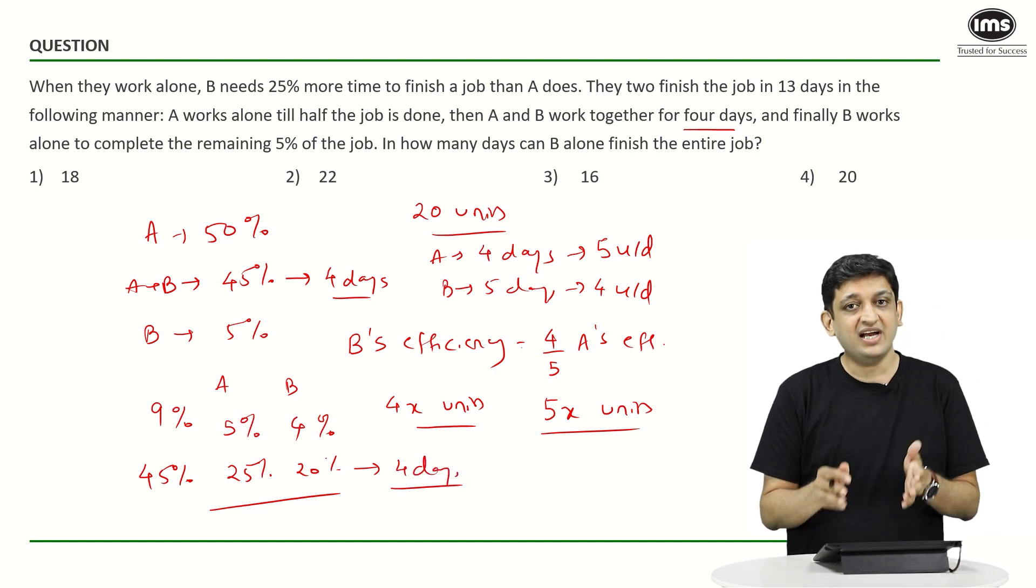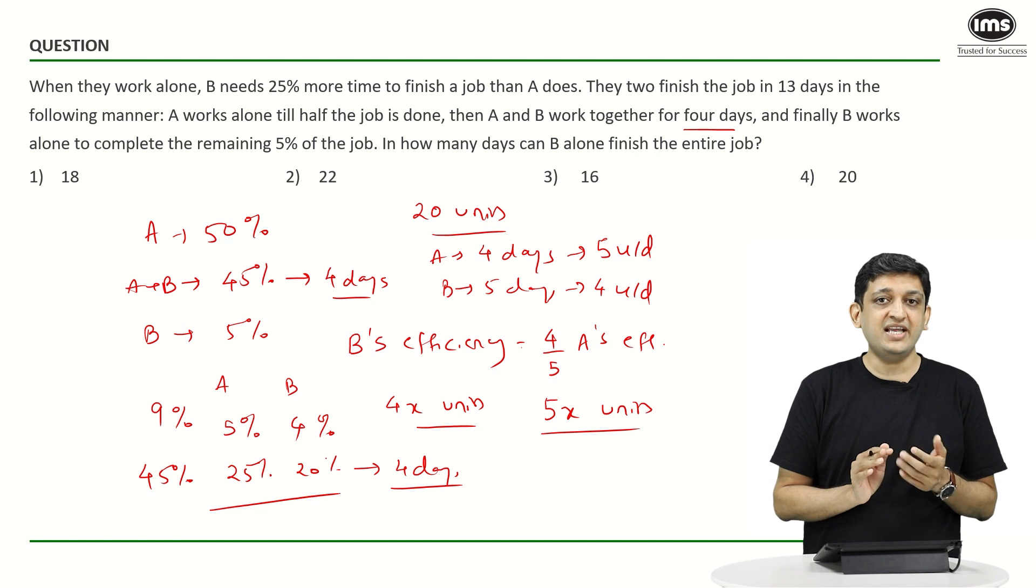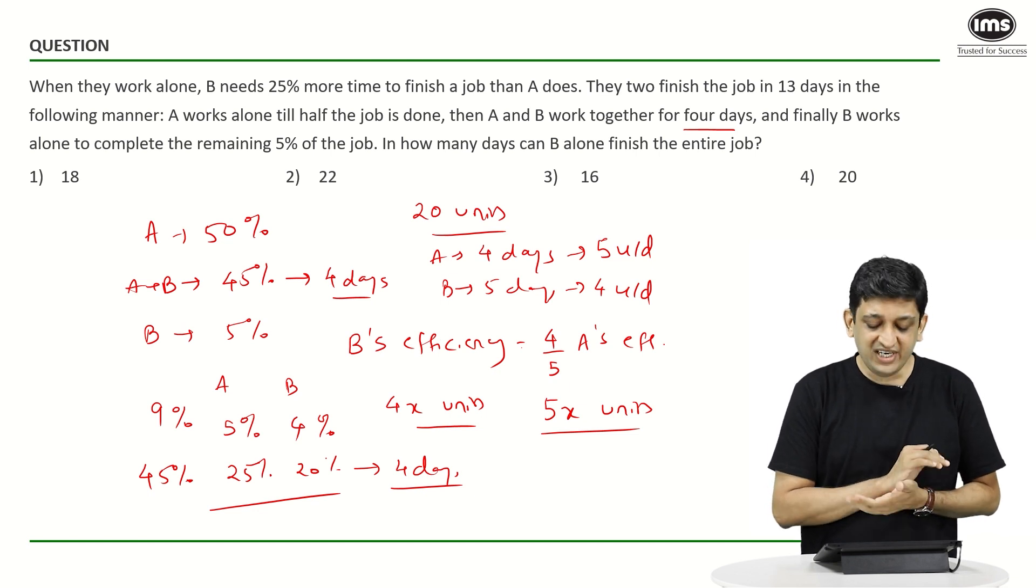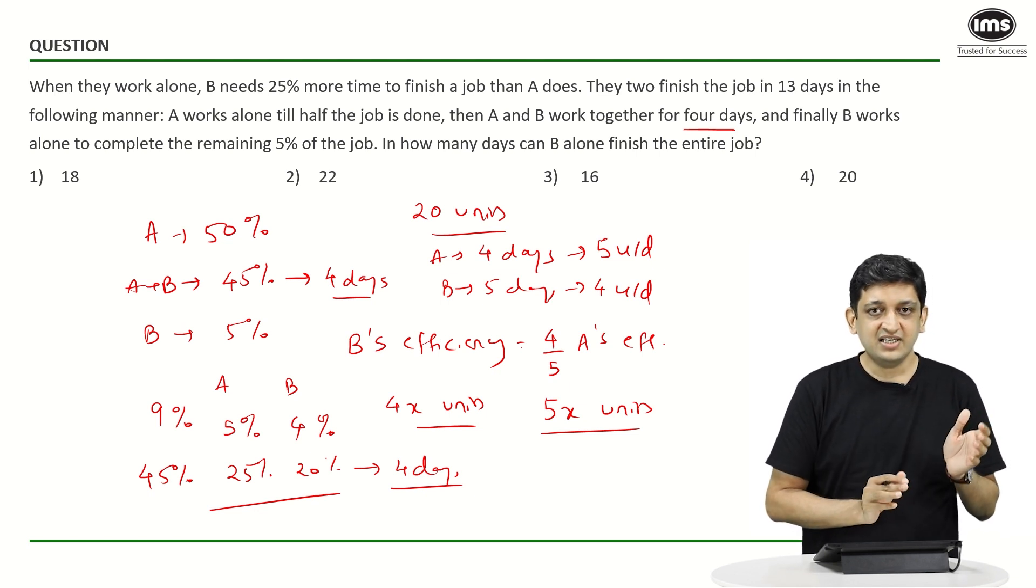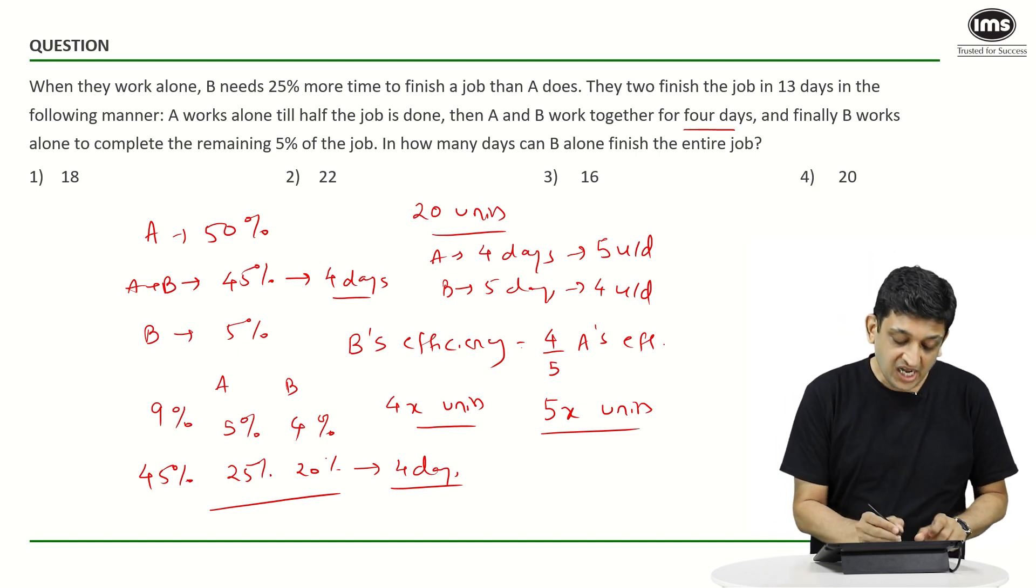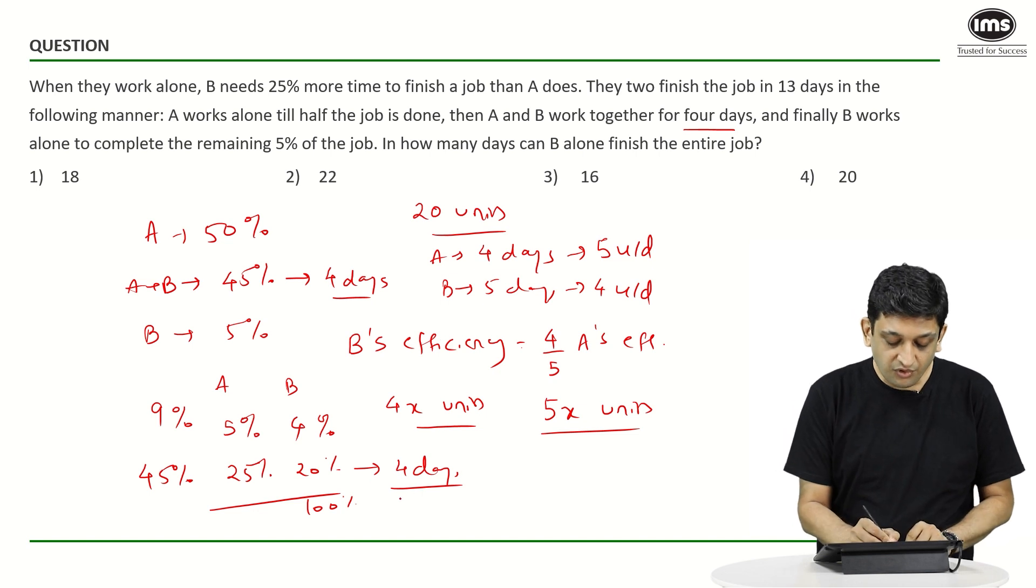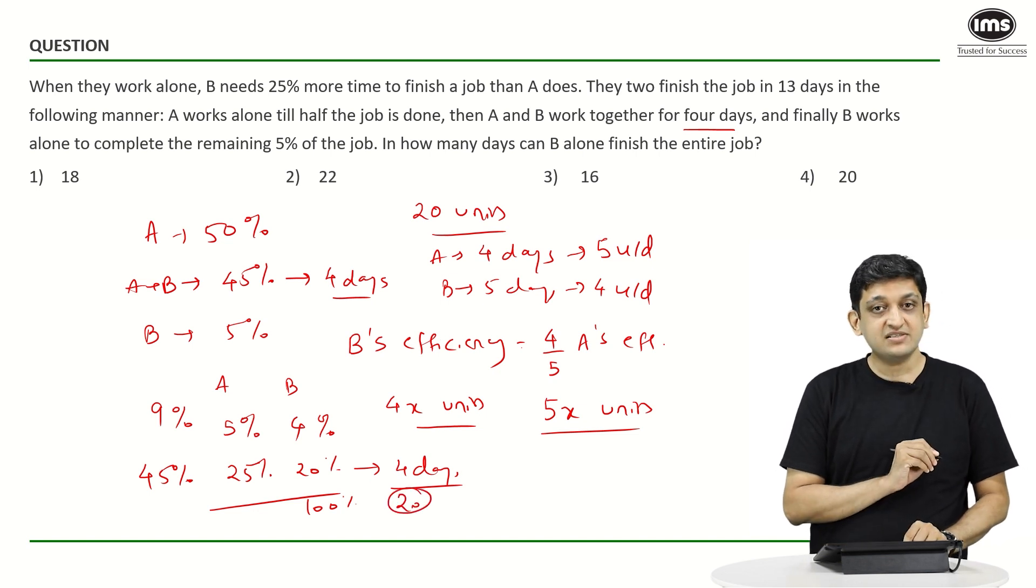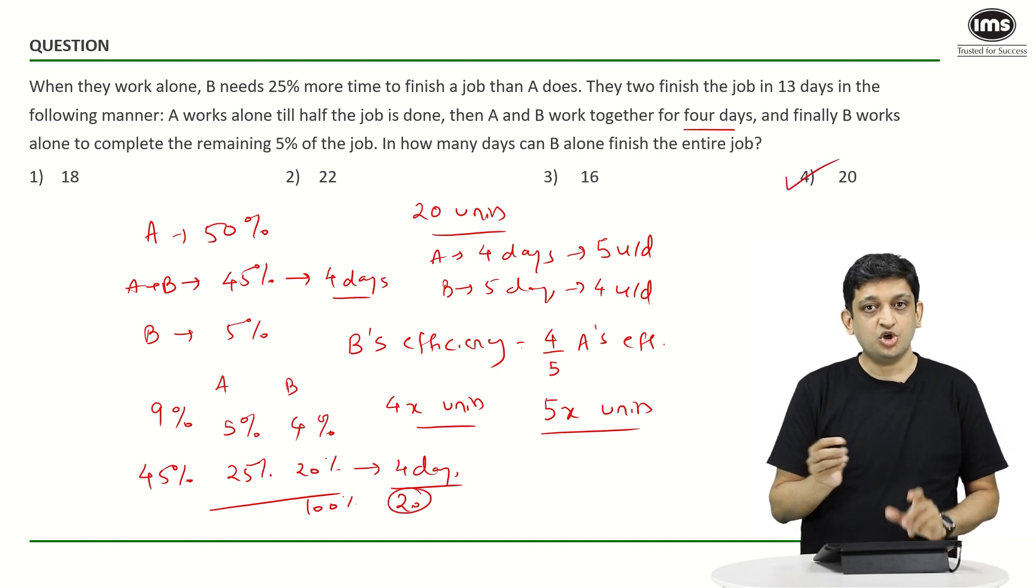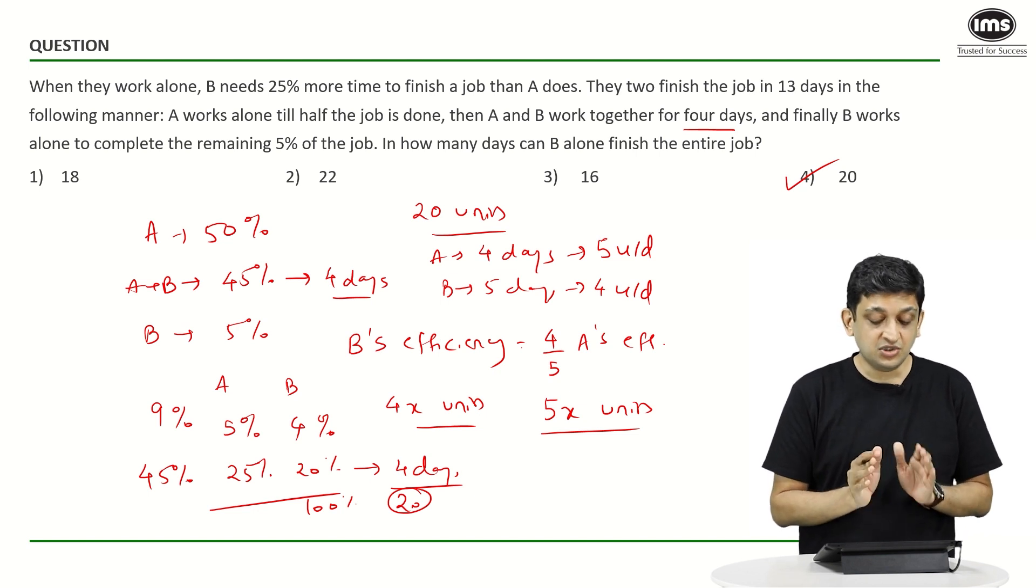Very easy question. 20 percent is being done by B alone in 4 days. How much time will B take to do 100 percent? Very easy. 4 into 5, that is 20 days, and that is our answer. So option 4, 20 is going to be the answer to this question.